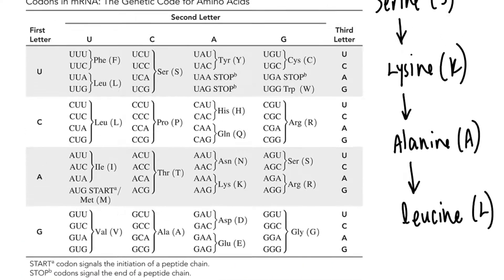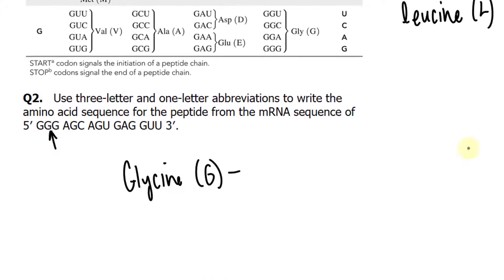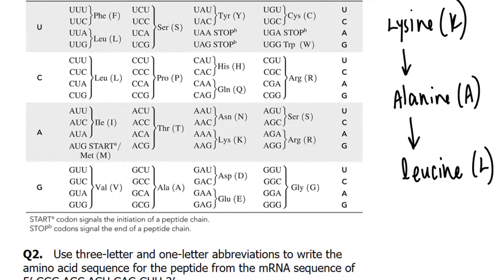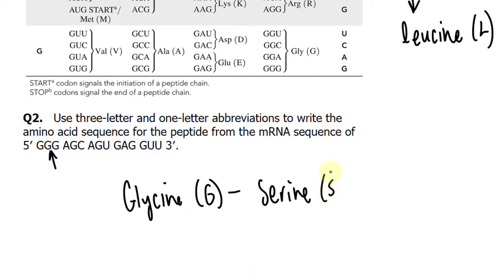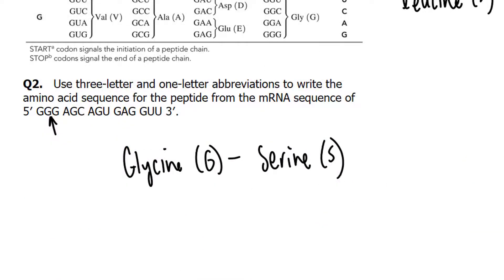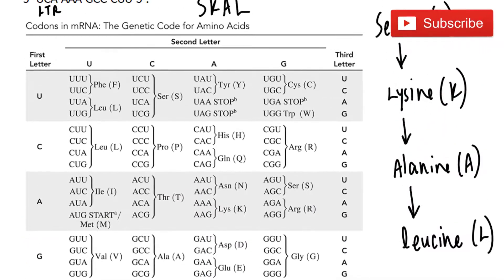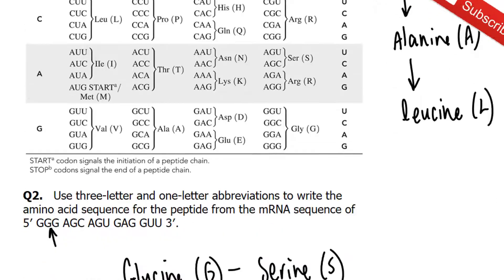Next, AGC — A, G, and C — would be serine, abbreviated S. Then we have AGU — A, G, and U — that's serine again.